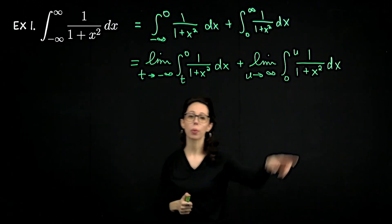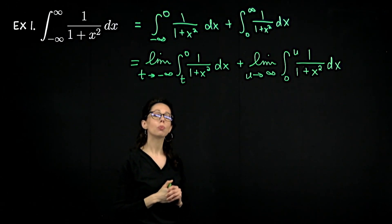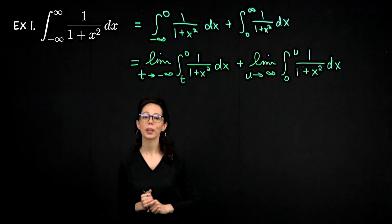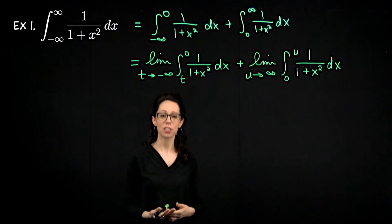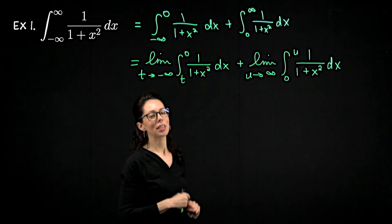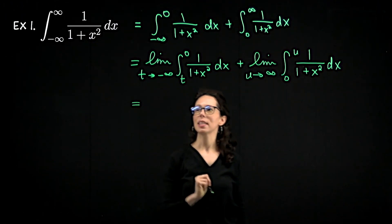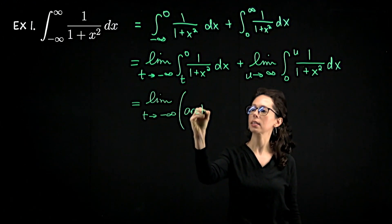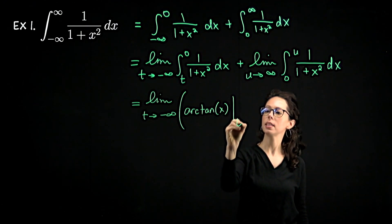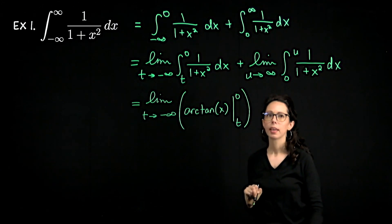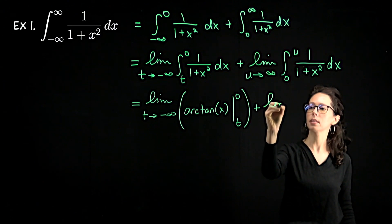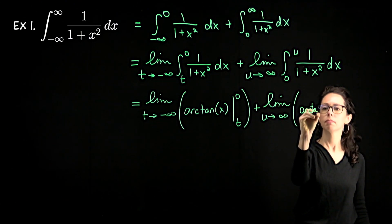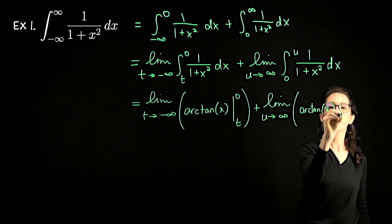Take a moment to think about the antiderivative of this integrand. Hopefully you realize that the antiderivative of 1 over 1 plus x squared is arctan. Proceeding with that knowledge, we can say this is the limit as t goes to negative infinity of arctan of x, where we plug in t as the lower bound and zero as the upper bound. Then the second piece is the limit as u goes to infinity of arctan of x, where the lower bound is zero and the upper bound is u.